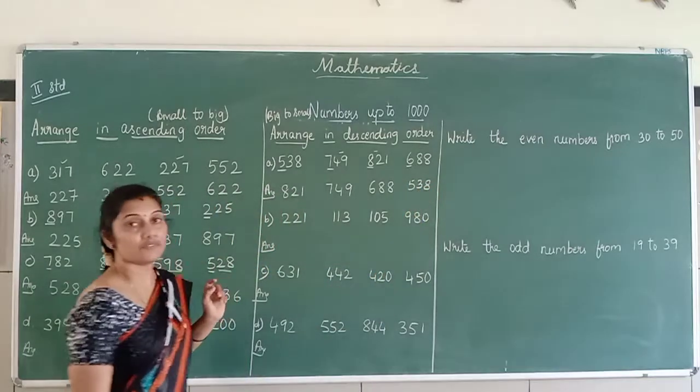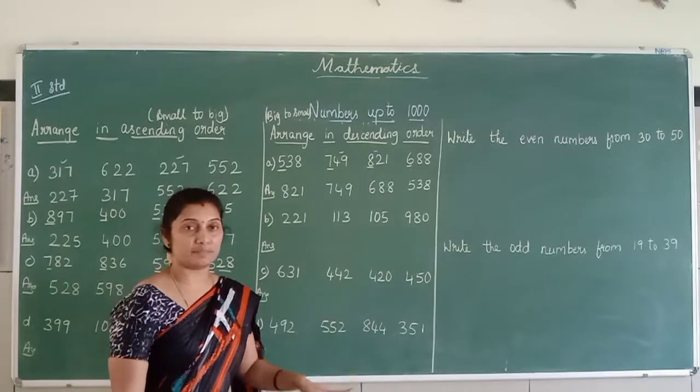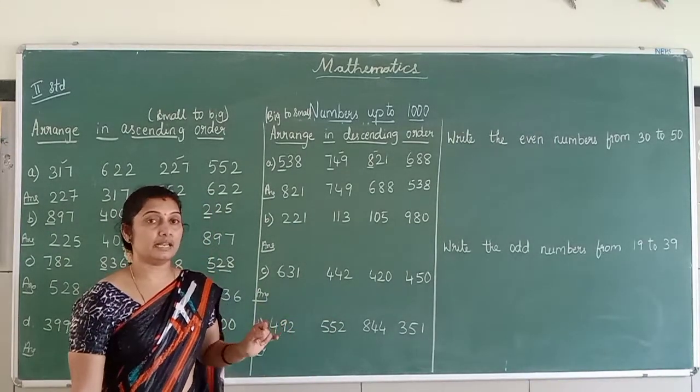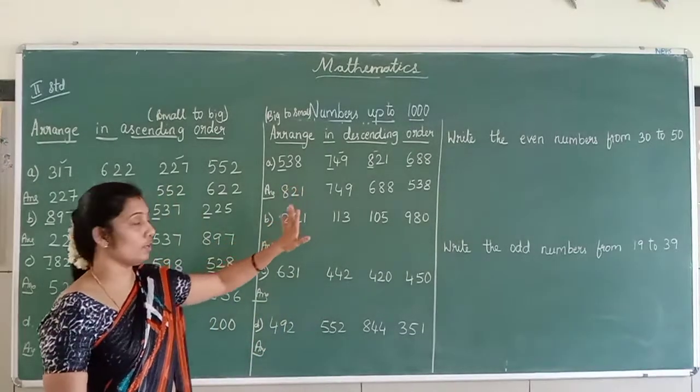So next will be 538. So this is how you are going with your descending order. Descending is you are getting down from the steps. So when you are getting down from the steps, you will count 10, 9, 8, 7, 6, 5. So this is what it is called as in your descending order.